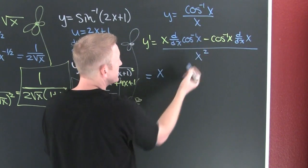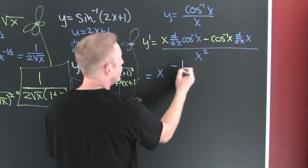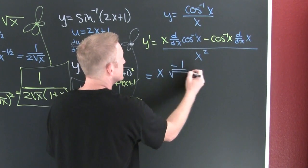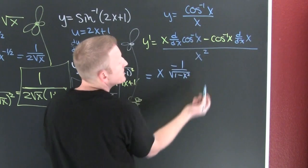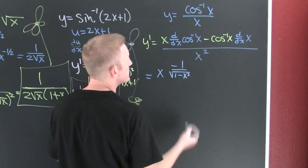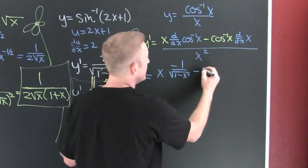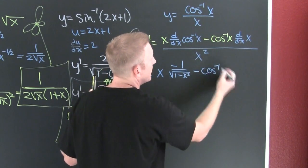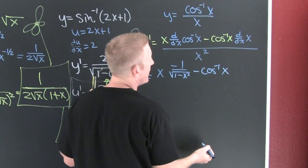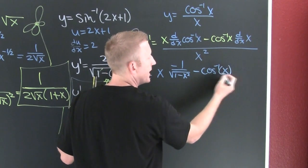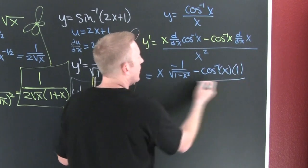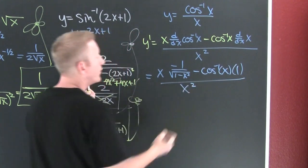Yeah. This is gonna be x times the derivative of the inverse cosine. It's gonna be minus 1 over the square root of 1 minus x squared. Here my u is x. Yes. Minus the cosine inverse times x. Yes. No. Cosine inverse of x times 1. On the bird. X squared.